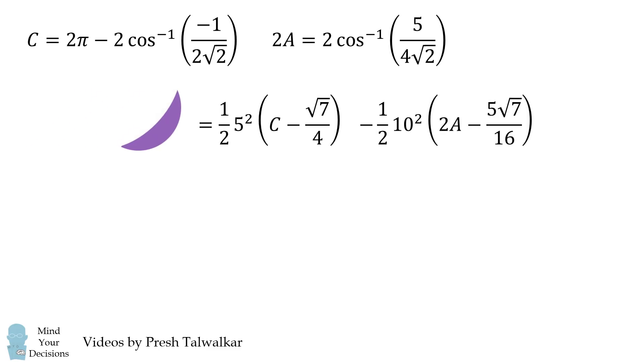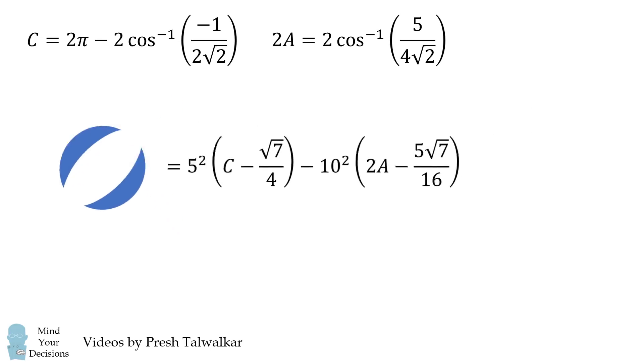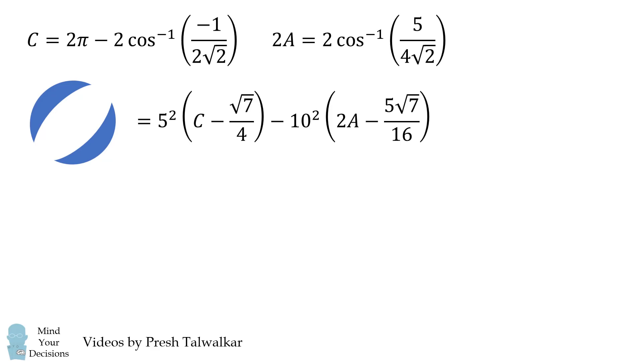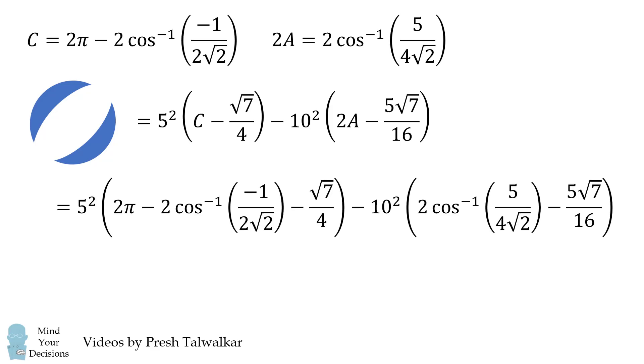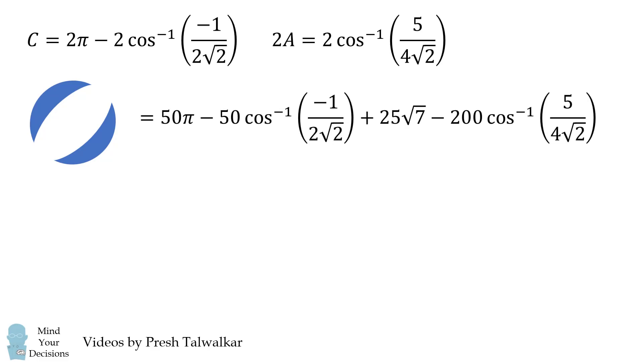Now, when we take the red shape from the purple shape, we end up with the blue shape. But we need the value of two of these blue shapes, so we'll multiply everything by two. Next, we can substitute in our values of c and a, and then we'll simplify, and we end up with this exact form of the answer. And this is approximately 29.276, and don't forget the square centimeters, and that's our answer.